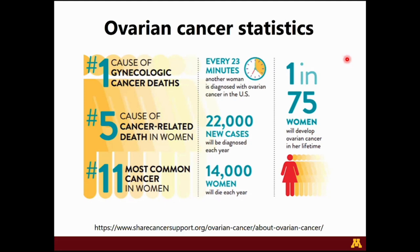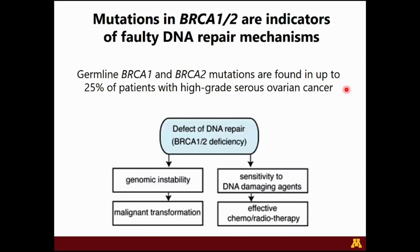We are studying ovarian cancer. To review some statistics: it's the number one cause of gynecologic cancer deaths, the number five cause of cancer-related death in women, and the 11th most common cancer in women. About one in 75 women will develop ovarian cancer in their lifetime. Mutations in BRCA1 and BRCA2 genes are indicators of faulty DNA repair mechanisms, and germline mutations in these genes are found in up to a quarter of patients with high-grade serous ovarian cancer.